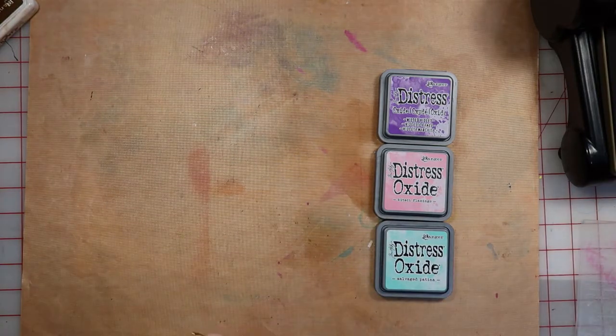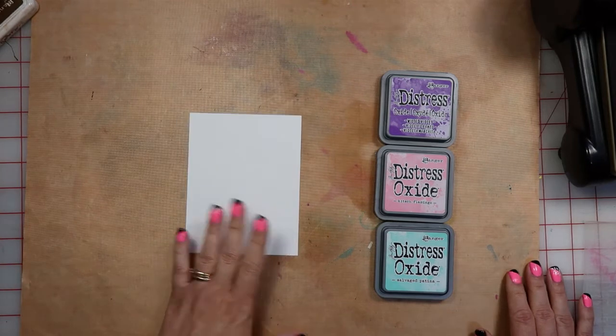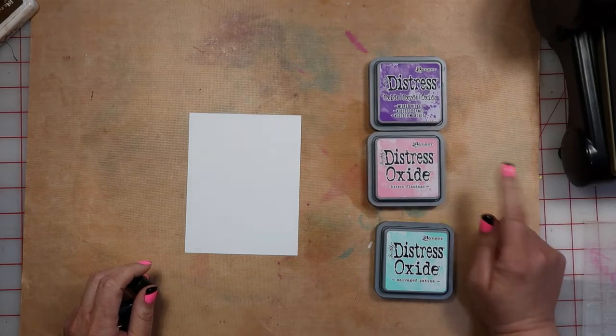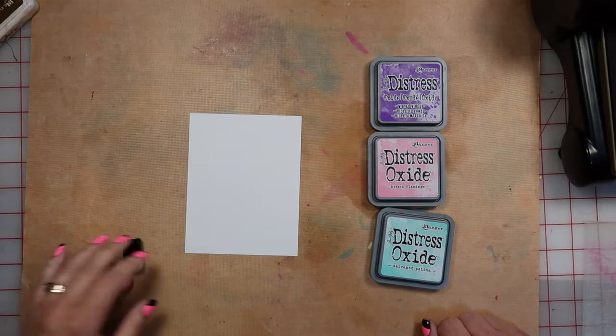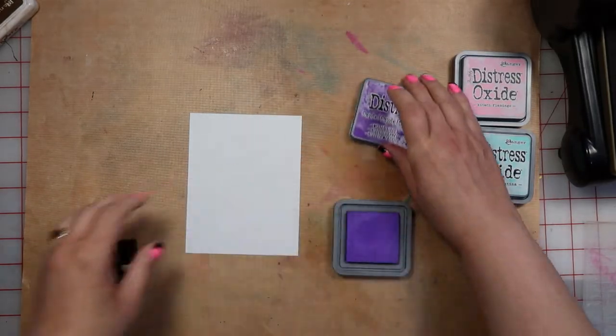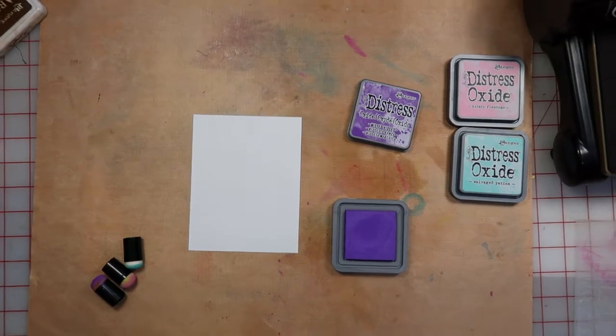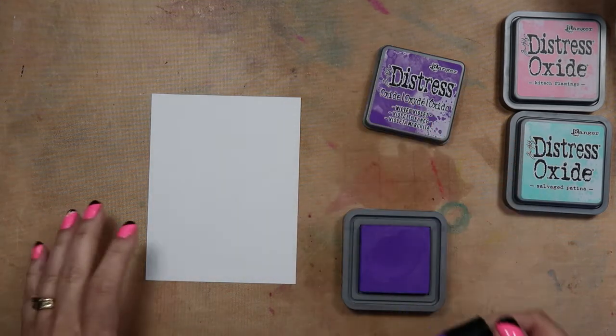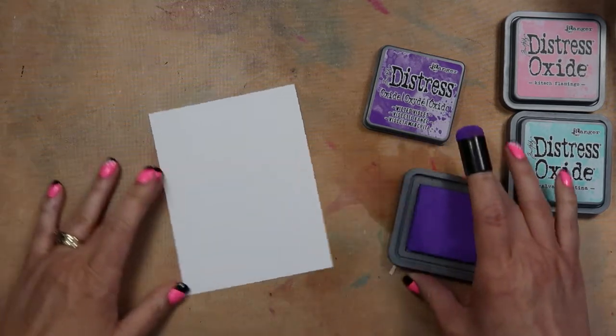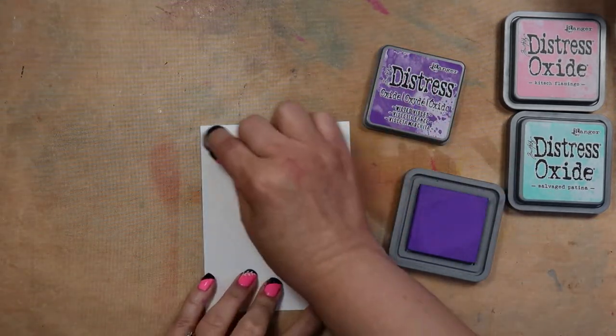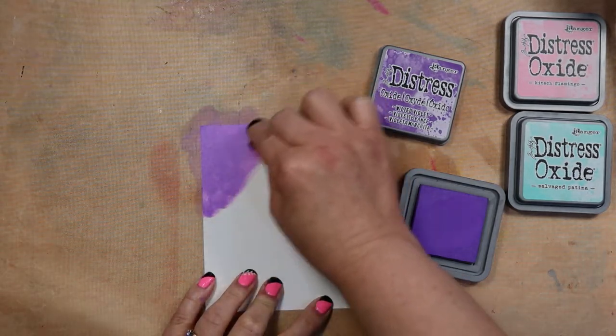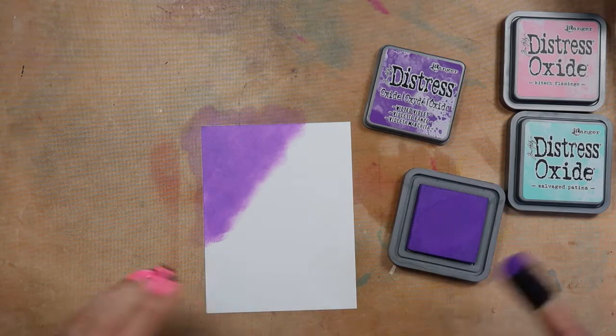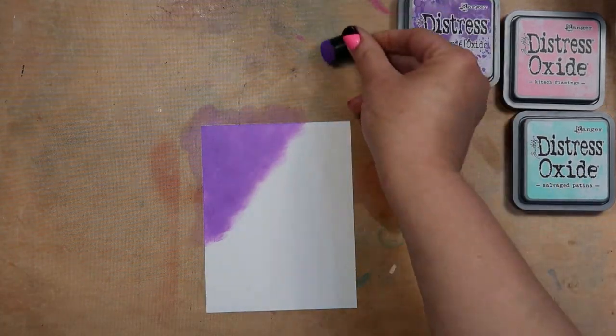So the first thing we're going to want to do today is ink up a piece of white cardstock. I'm going to play with the distress oxide inks, so I've got Wilted Violet, I've got Kitsch Flamingo, and the new Salvaged Patina. I'm going to come in and start with the Wilted Violet. I'll move you in just a little bit closer here. I'm just using my little finger dabber. I'm going to pick up some ink off that ink pad and I want to come in at an angle and just get some of that ink down on this cardstock.